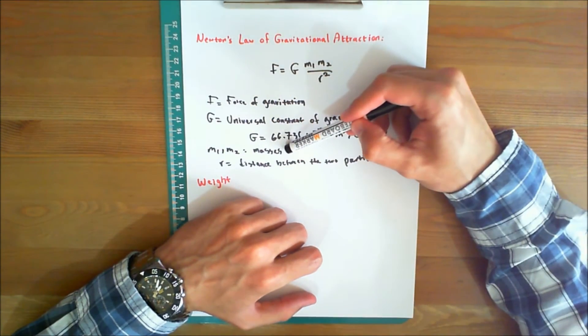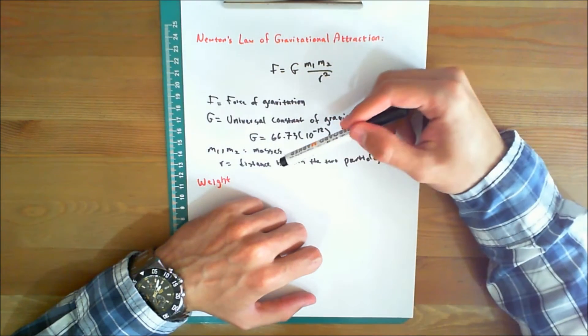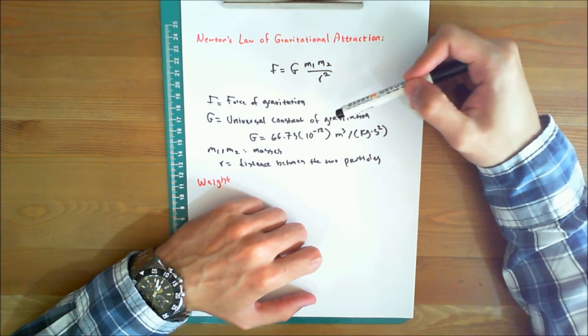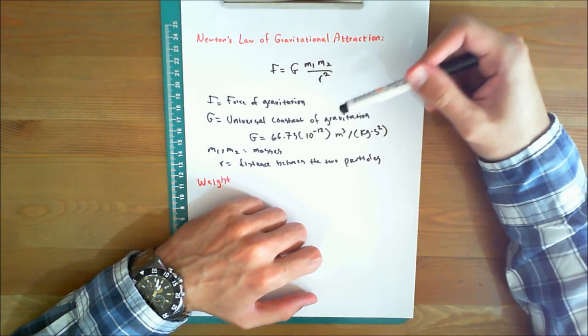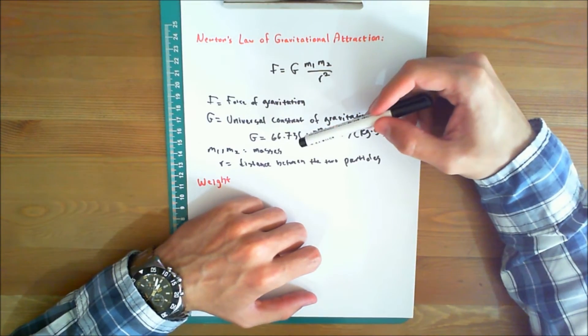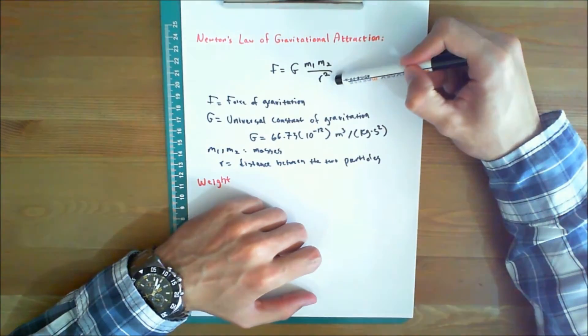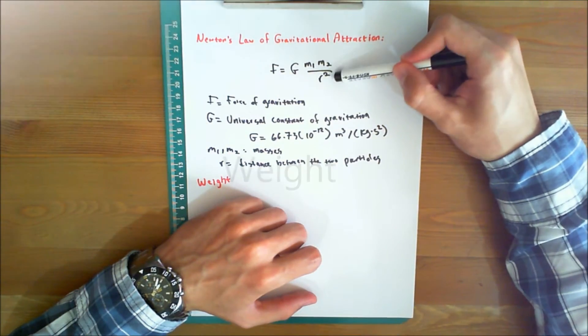m1 and m2 are the masses of the particles, and r is the distance between the two particles. This law states that every point mass in the universe attracts every other point mass, and the force of gravitation is proportional to the product of the two masses and inversely proportional to the square of the distance between them.